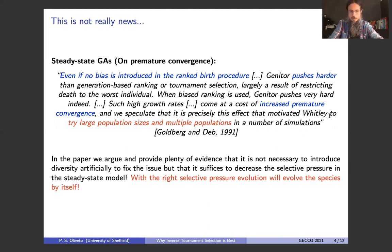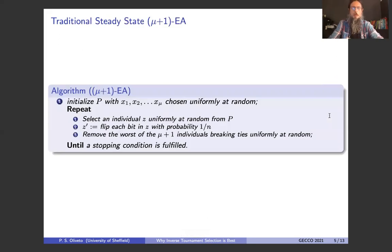So what we argue in this paper, and provide plenty of evidence regarding this, is that it is not necessary to introduce diversity artificially to decrease the selective pressure, but in the steady state model at least. You can decrease the selective pressure, and with the right selective pressure, evolution will automatically evolve the species by itself. So to make our point, we just look at the standard mu plus one steady state EA, where we have a population of mu individuals, and at each generation we select one initially with standard uniform selection, then we create an offspring by flipping each bit of probability one over n, and kick out from the population the worst of the mu plus one individuals, and repeat the loop.